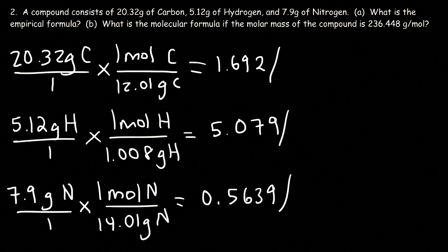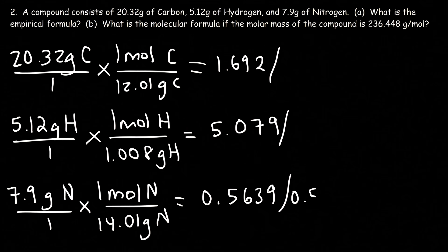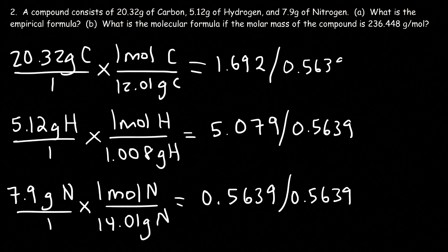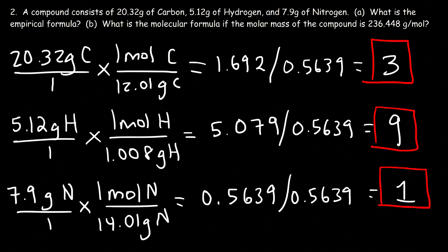Now divide each number by the smallest of the three values, which is 0.5639. 1.692 divided by 0.5639 is about 3. 5.079 divided by 0.5639 is 9. And nitrogen is 1. So in the empirical formula there are 3 carbon atoms, 9 hydrogen atoms, and 1 nitrogen atom. The empirical formula is C3H9N.